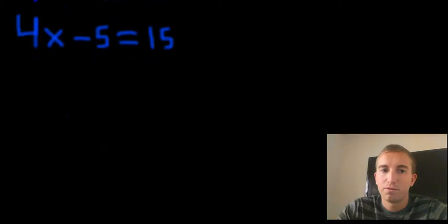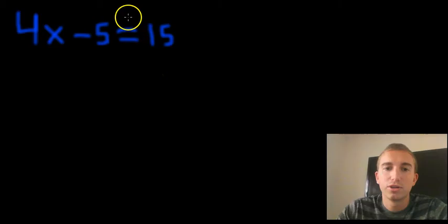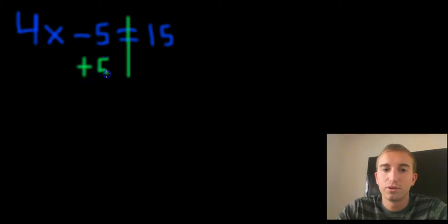Let's go ahead and try one more problem. Let's say if we have 4x minus 5 equals 15. Again, we want to divide the equation into two parts through the equal sign. So we have a left side and a right side. Again, we want x by itself. But we see that there's a negative 5 next to it. So we want to perform the opposite operation, which would be to add 5 to both sides of the equation.